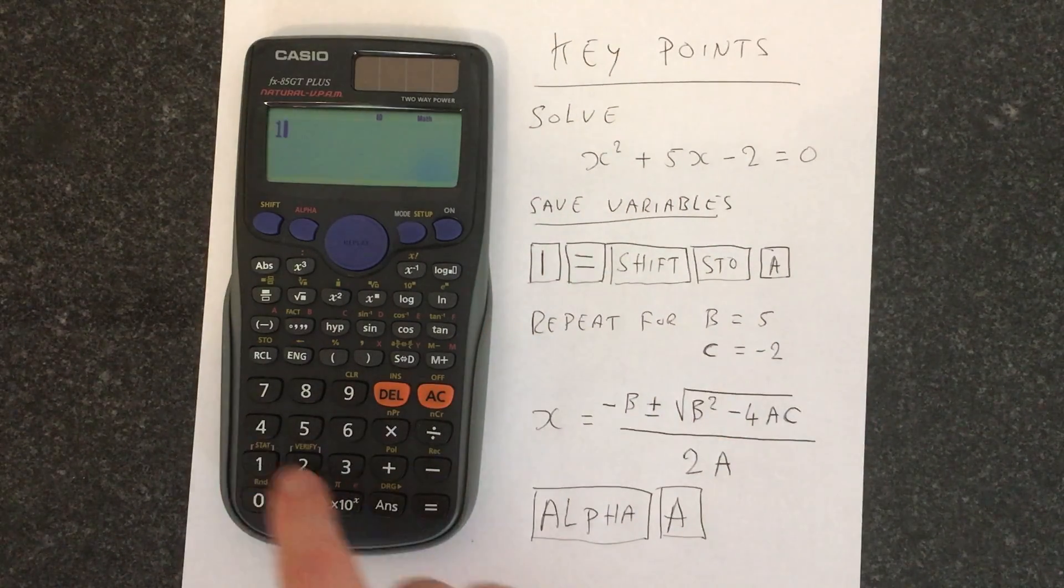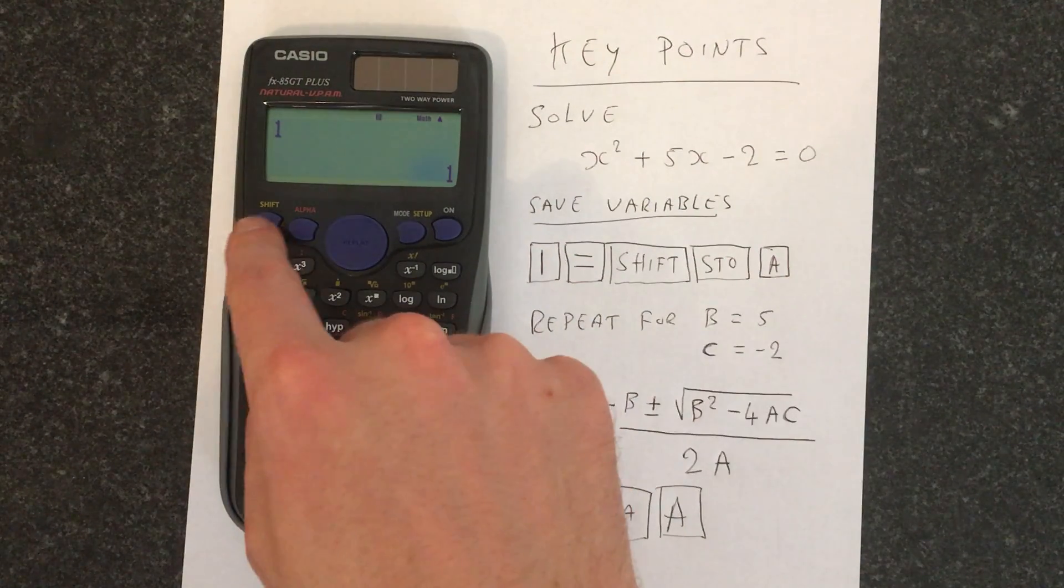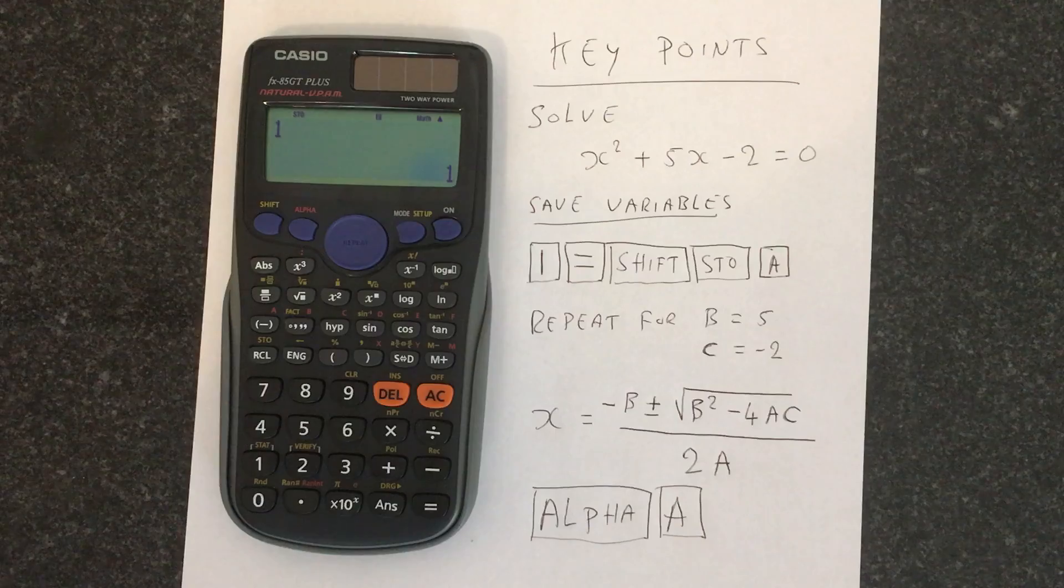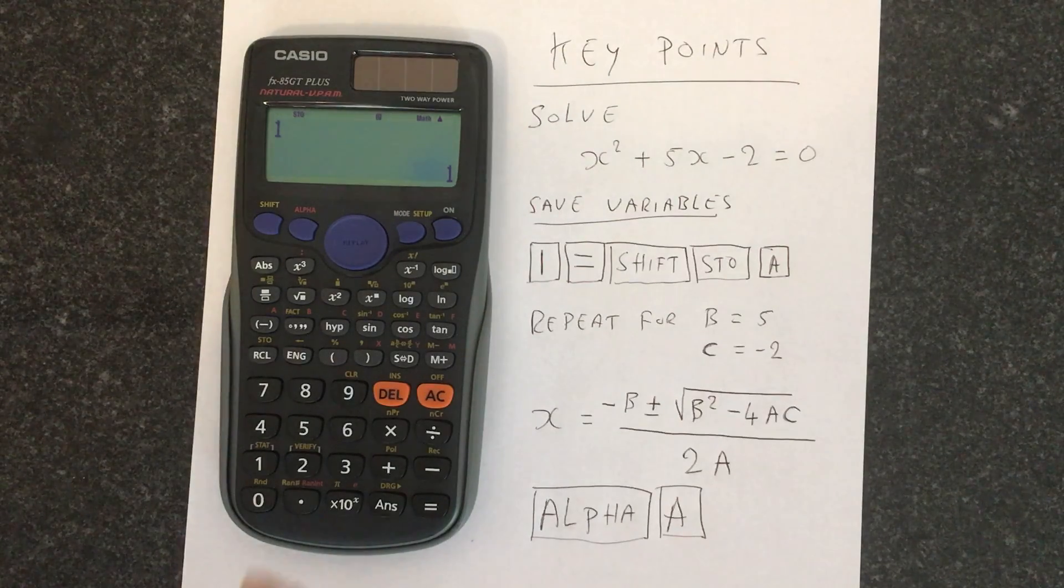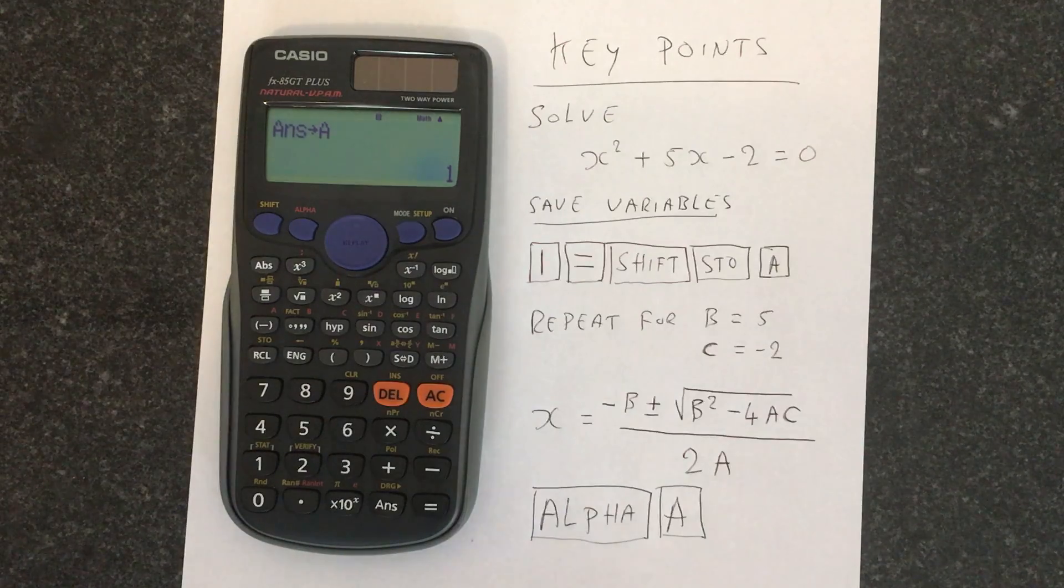So we're going to enter 1 equals, so we're following this set of instructions here. Then if you go shift and then the STO button, and then we now press a, and so we've now got that value stored in a.